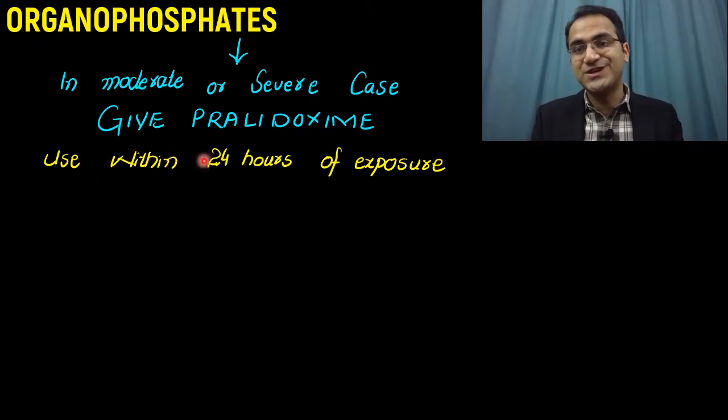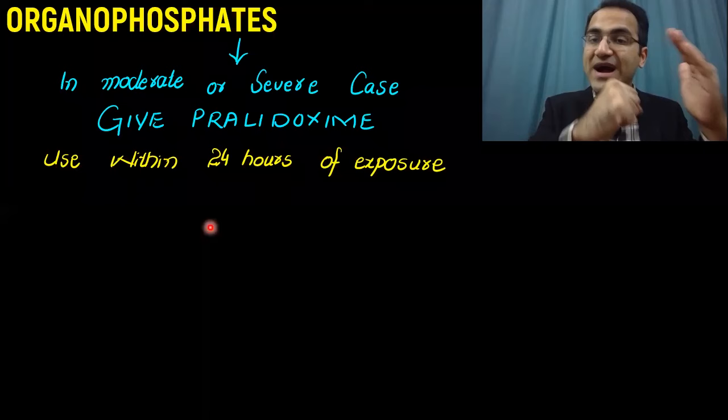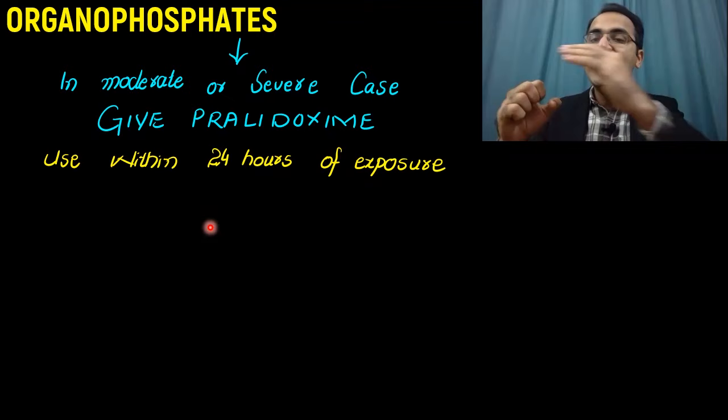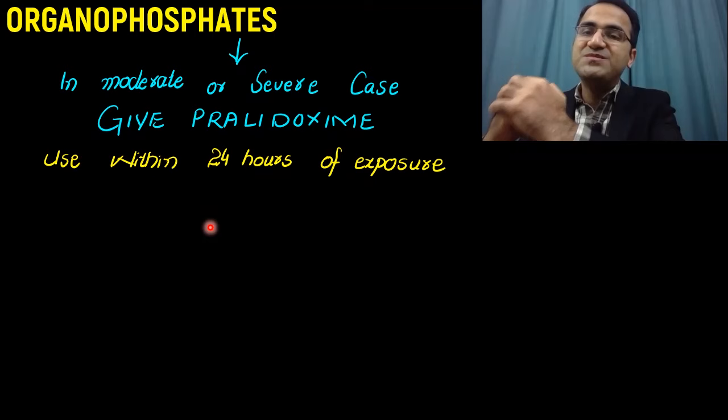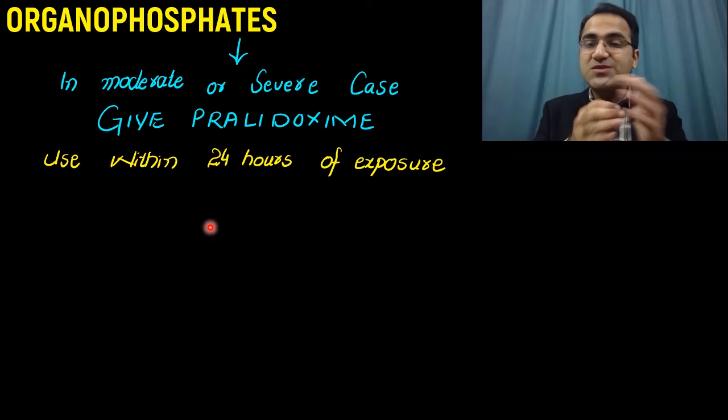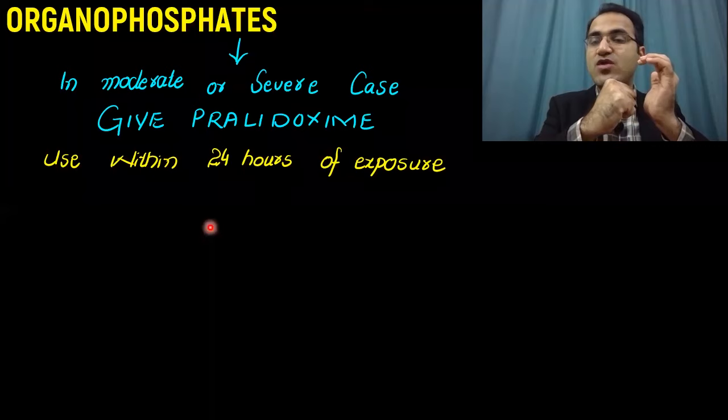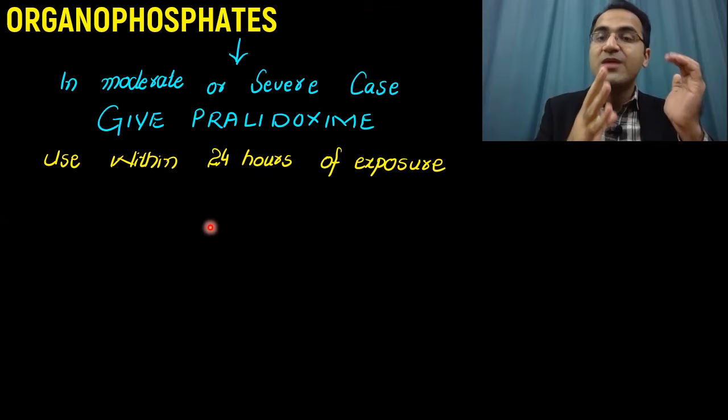In moderate to severe cases, you give pralidoxime. Now remember, as I said that initially organophosphates bind the acetylcholine esterase reversibly. After a few hours have passed, aging takes place and that binding becomes irreversible. If you give pralidoxime within 24 hours of exposure, when the binding is reversible, then pralidoxime would effectively detach organophosphates from acetylcholine esterase and acetylcholine esterase would be free.